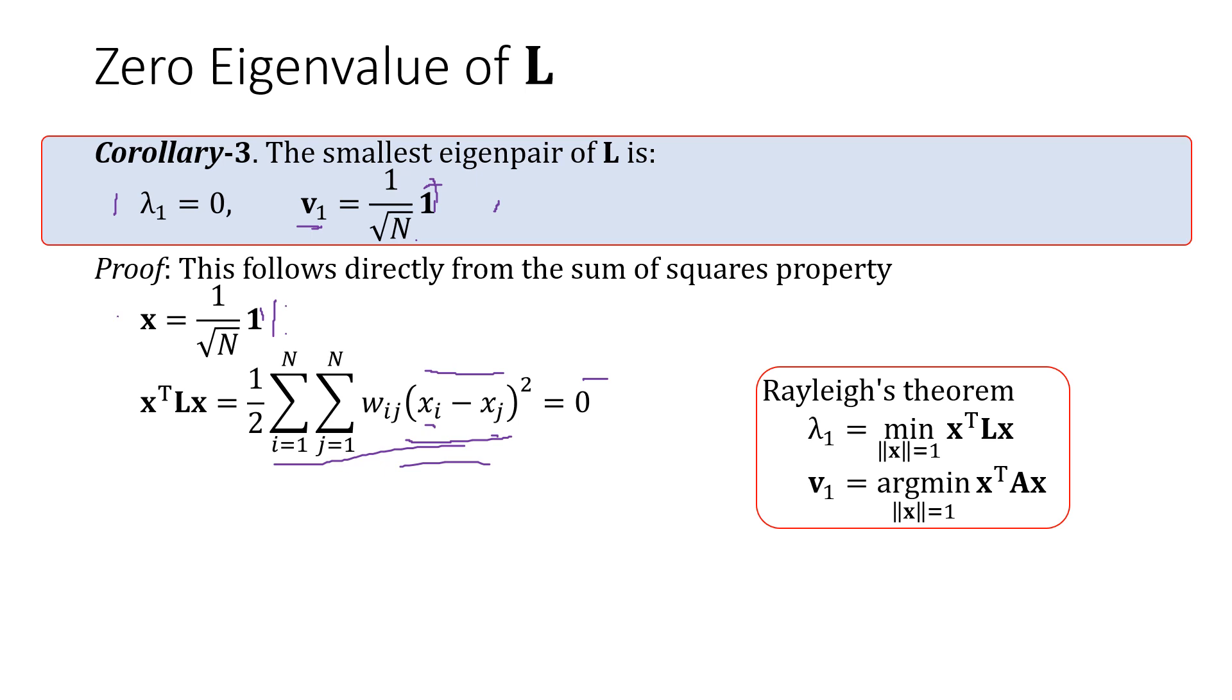Now note that this is the smallest value of x transpose Lx that we can get, because this can never be negative. Because it has each term being a square. So by Rayleigh's theorem, zero is the lowest you can get, which is lambda 1, the smallest eigenvalue. And this x here normalized is the eigenvector corresponding to the smallest eigenvalue.